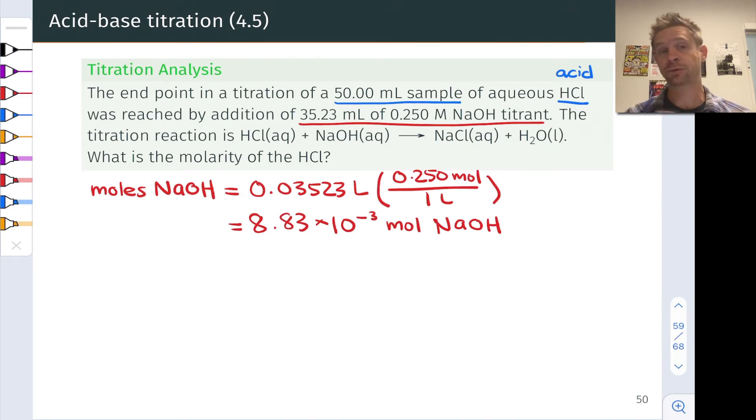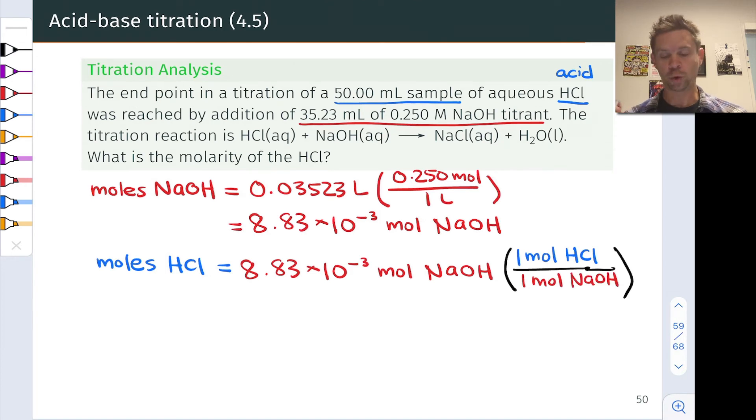Now using the titration chemical equation, there's a 1 to 1 mole ratio between HCl and NaOH, and at the equivalence point, which occurs after this addition of 35.23 milliliters—the endpoint and equivalence point here we're assuming are the same point—this is numerically equal to the moles of HCl, thanks to the 1 to 1 mole ratio of HCl to NaOH.